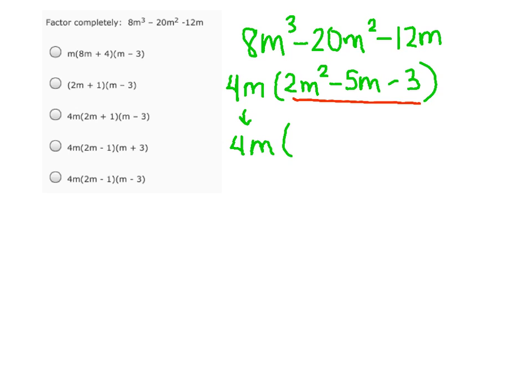If we use our trick of multiplying these outside numbers, we have 2 times 3, that gives us 6. We need to find factors of 6 that will add or subtract to give us a negative 5. So if we look at 1 times 6, we know that 1 minus 6 equals negative 5.